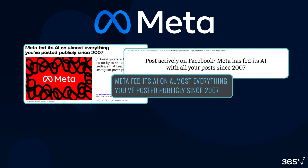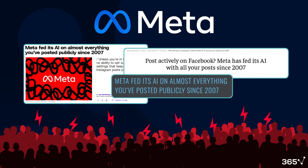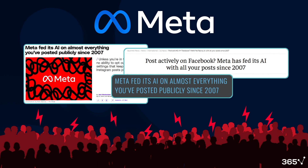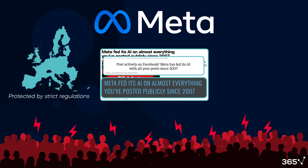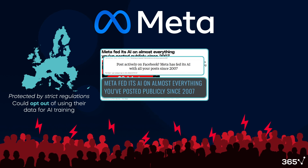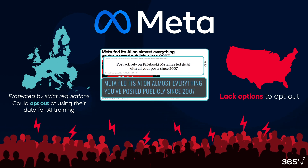In mid-2024, Meta revealed that it has been using publicly shared posts dating back to 2007 to train its AI models. This news caused a backlash – many users felt their privacy was violated because they weren't aware their content was being used this way. The situation got even more complicated by regional differences in data protection laws. For instance, European users, protected by strict regulations like GDPR, could opt out of having their data used for AI training. Meanwhile, users in other regions, like the US, lacked similar protections, leading to frustration and helplessness.